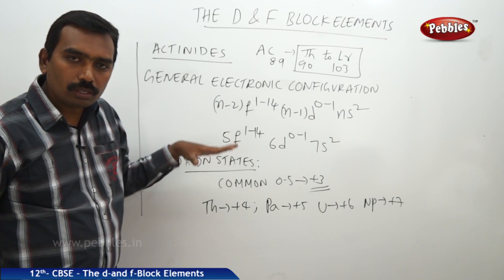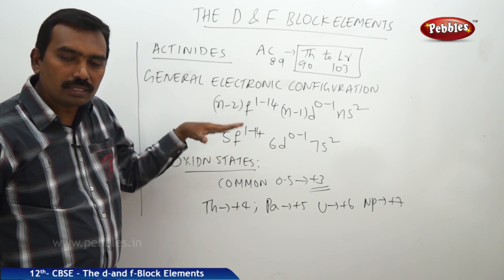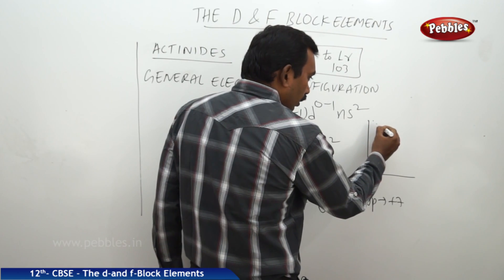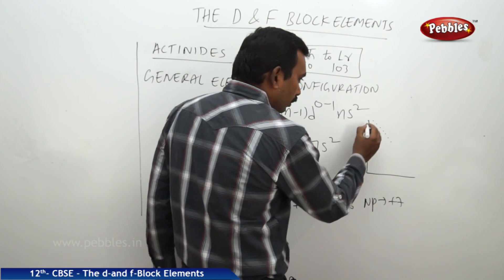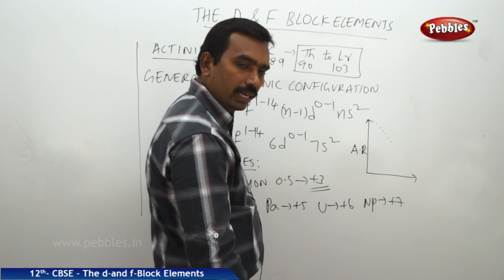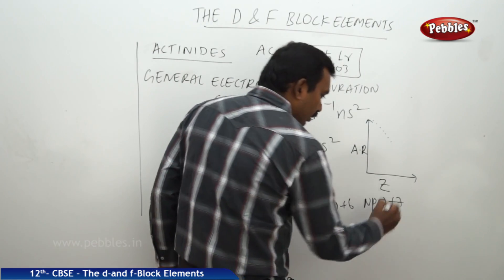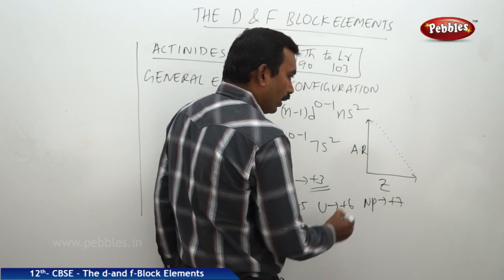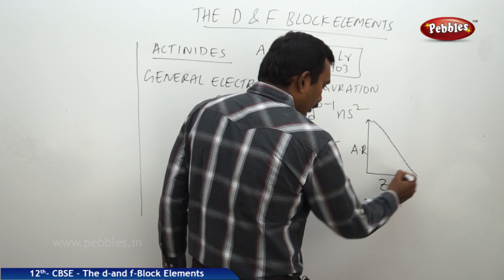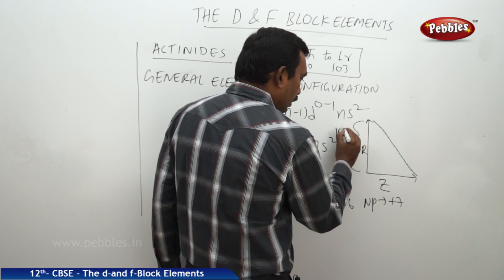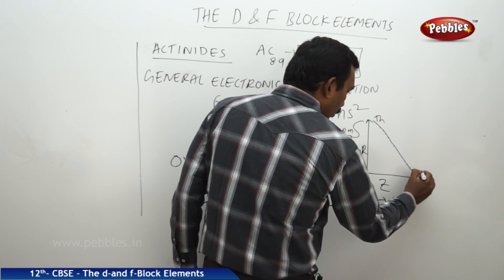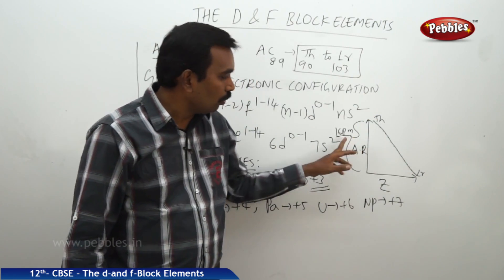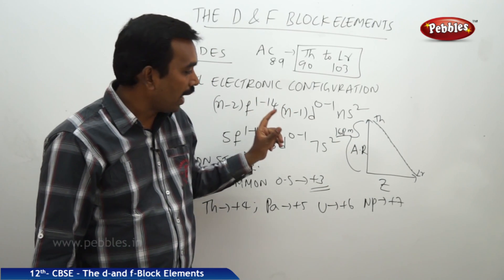Like lanthanides, in actinides we also observe a regular decrease in atomic radius. If you plot a graph of atomic radius versus atomic number Z for actinides, the atomic radius decreases regularly from thorium to lawrencium, by only 16 picometers. This is due to actinide contraction.